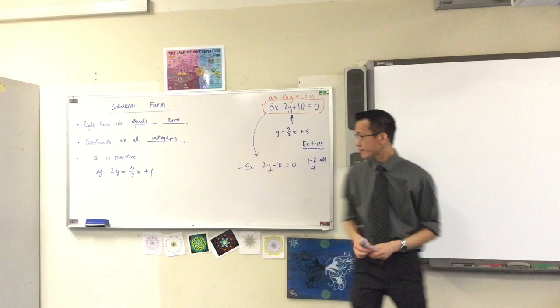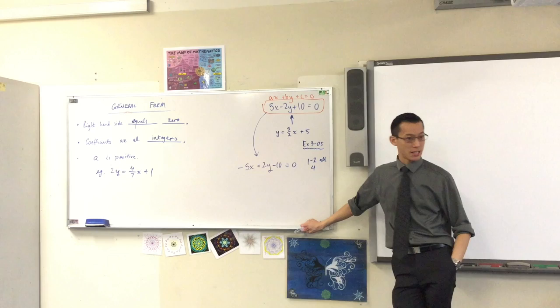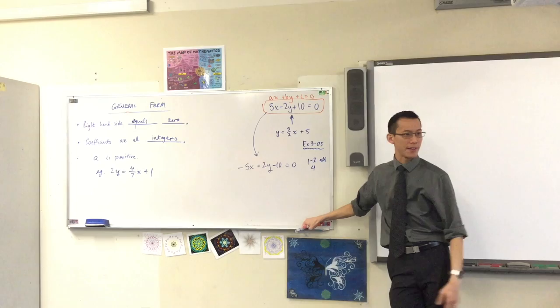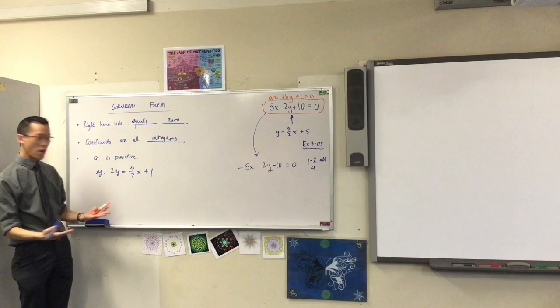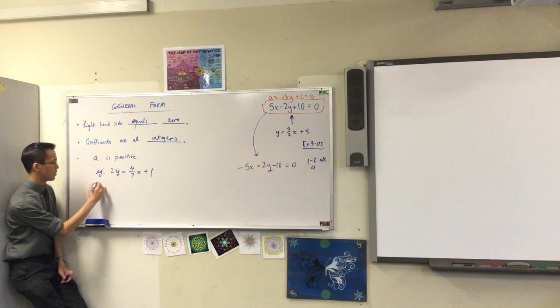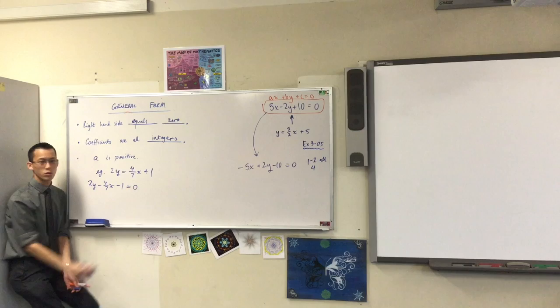So what do I want? I want the right-hand side to be 0. So that's the first thing I'm going to start to work out. There's stuff on the right-hand side. I want to get all of it over on the left. So what shall I do? I should subtract all of this stuff from both sides. So you can see, I'm going to get, let's see here, 2y minus this, minus this, equals 0. So I'm looking at my little dot point list here. The right-hand side equals 0, check.